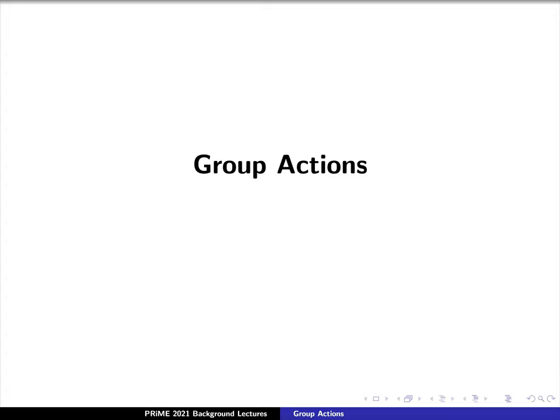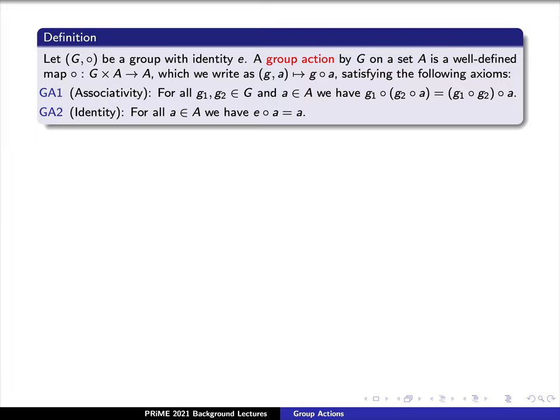We'll use this now to motivate the concept of group actions. Here's a definition. Let the pair G along with an operation circle be a group with identity E. A group action by G on a set A is a well-defined map, which we will also denote by circle, from G cross A to A, which we write as sending the pair lowercase g, lowercase a, to the element g circle a, which satisfies the following two axioms. The first we call associativity.